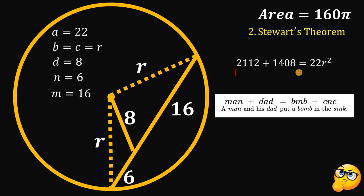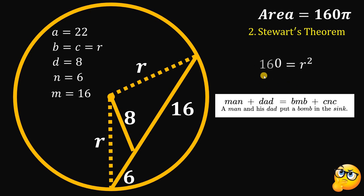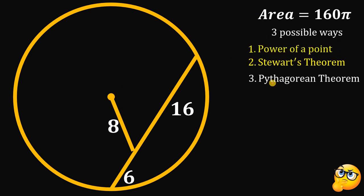Dividing both sides by 22, we get 3,520 ÷ 22 = 160. So R² = 160. Therefore the area of the circle is 160π square units — the same result using our second method, the Stewart Theorem.